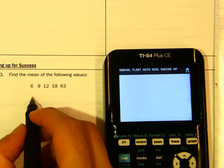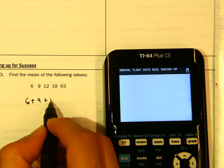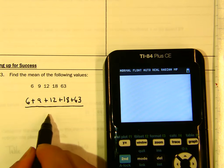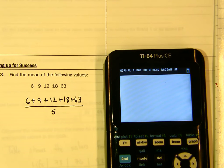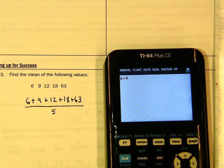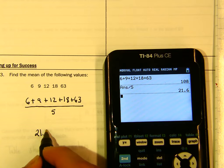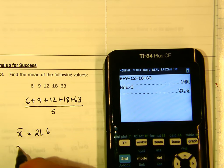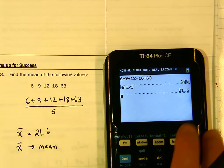Let's say you paused the video and want to check how it's done. What would you do? You do 6 + 9 + 12 + 18 + 63, then divide by the number of data values — which is five. So 6 + 9 + 12 + 18 + 63 divided by 5 gives us 21.6. And x-bar means mean, so x̄ = 21.6.